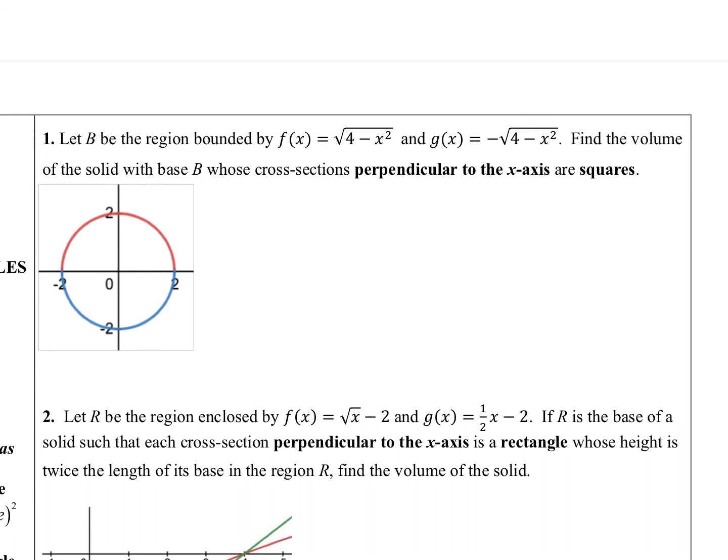On example one, b is a region bounded by f of x equals the square root of 4 minus x squared, and g of x, the negative of that. What that is is just the top half of the circle is f of x, and the bottom half of the circle is g of x. And the circle is the base of my solid. And I'm going to have squares perpendicular to the x-axis rising up out of this region. I'm going to attempt to show you what this looks like, and then I'm going to pull in a video that will demonstrate it much better than I will.